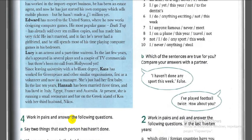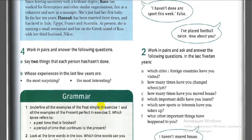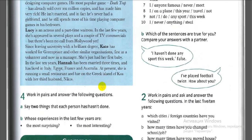Say two things that each person has done and two things that each person hasn't done — so make four sentences per person. Pause and make your sentences. Next: whose experiences in the last few years are the most surprising and the most interesting? Pause and answer these two questions.